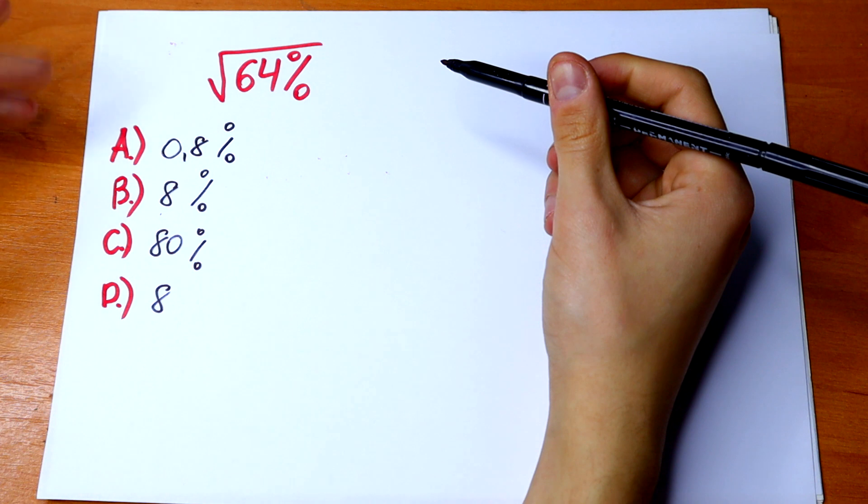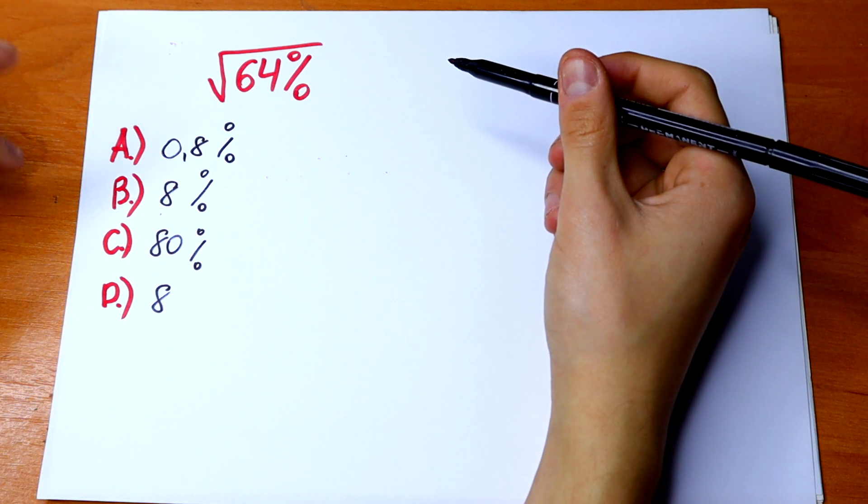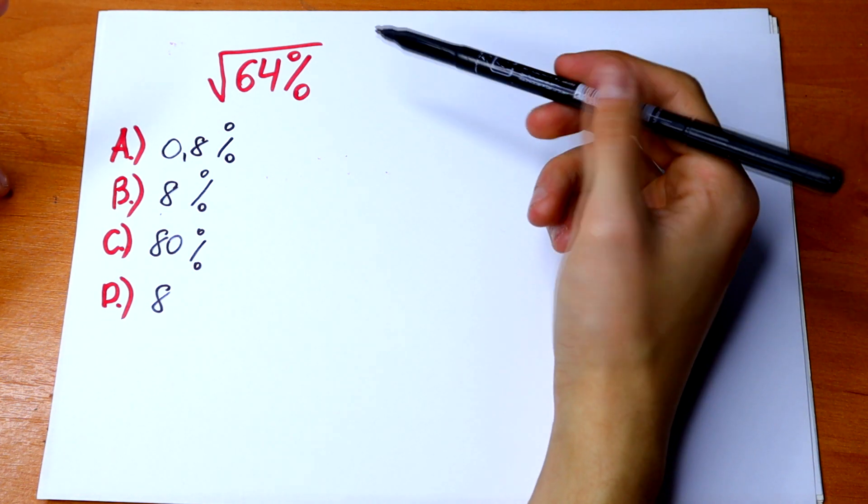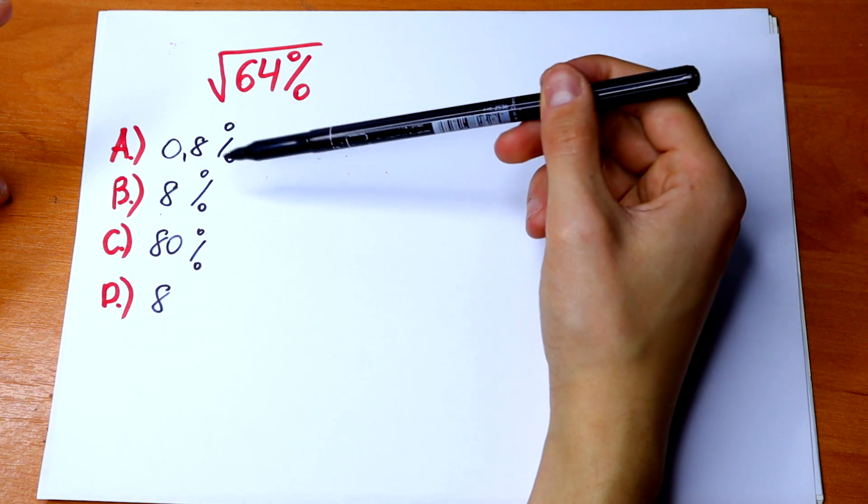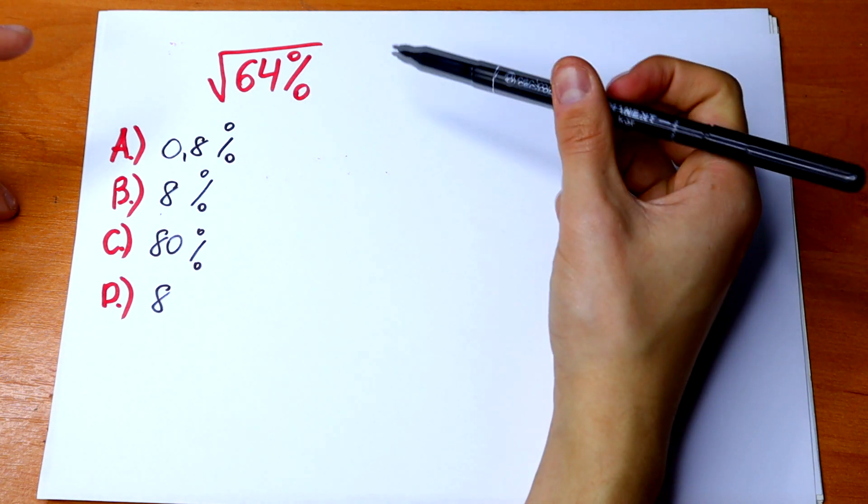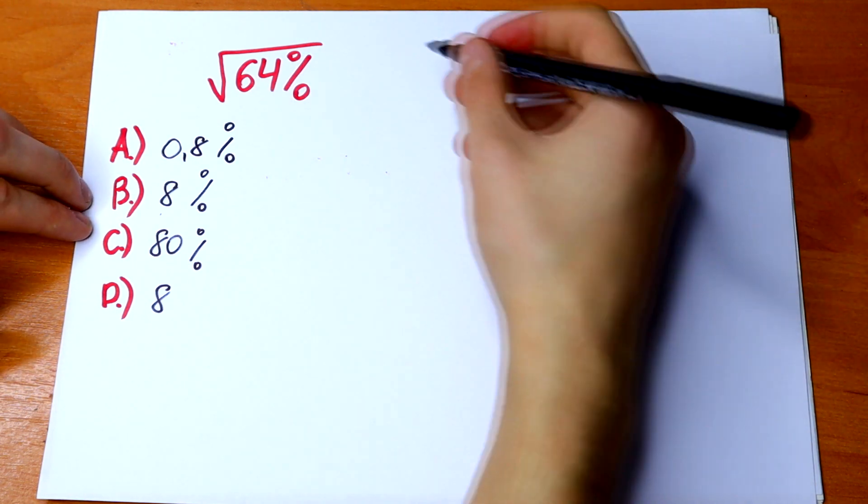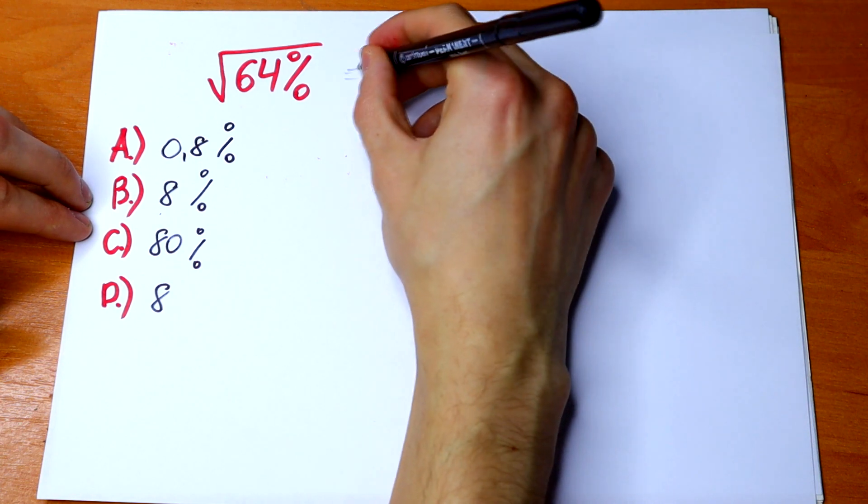The most common mistake that students make is that they put the answer B, but this answer is not correct because we can solve this in a different way.